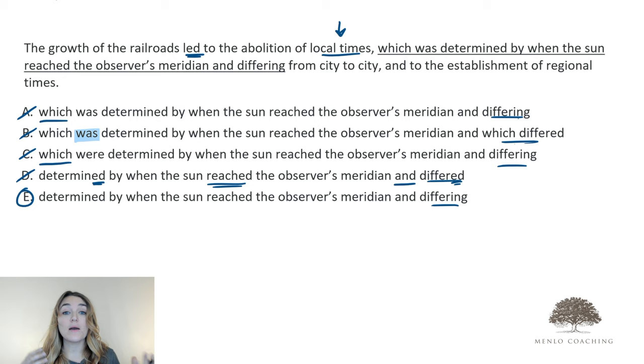And answer option E, by process of elimination, was the only answer that didn't have something fatally flawed with it, even if it isn't the first way you might have chosen to frame the sentence. So when we're looking at sentence correction examples, our job isn't to become absolute experts of the English language and everything that entails. Our job is to think critically, leverage the information in front of us, and ensure we're considering meaning along the way.